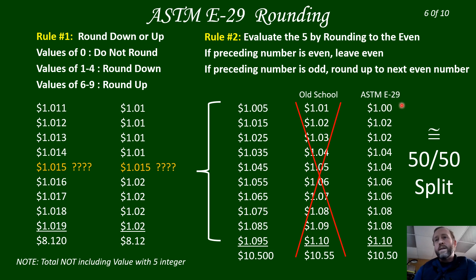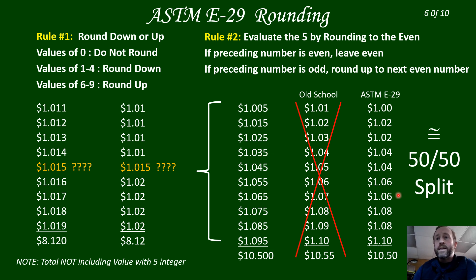In the ASTM E29 method, we treat the five differently — this is rule two: round to even. If the preceding number is even, leave it even. If the preceding number is odd, round up to the next even number. A zero is technically even, so you see it even and leave it even — the zero stays. Old school rounds it up, but here even means leave it even. If it's one cent and a half, it's odd — round up to two cents. If it's two cents and a half, it's even — leave it even. This creates a 50-50 split across all values.